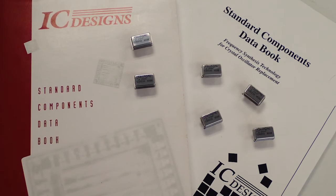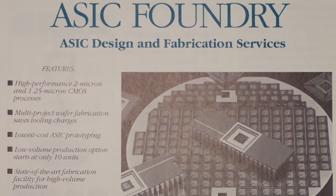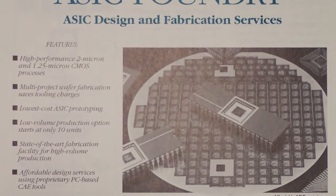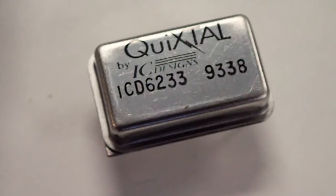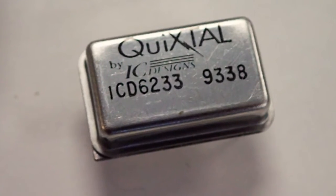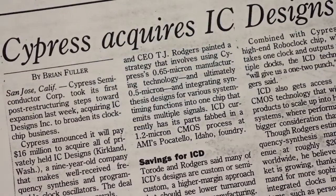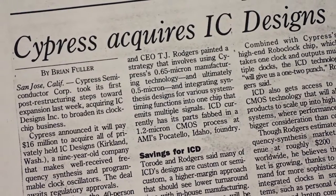The reason we're located here in Seattle is historical. IC Design started as a software company doing integrated circuit CAD tools. Over time, we began to do individual products, and especially we found an opportunity to do clock generator chips, and that company was acquired by Cypress Semiconductor in about 1993.